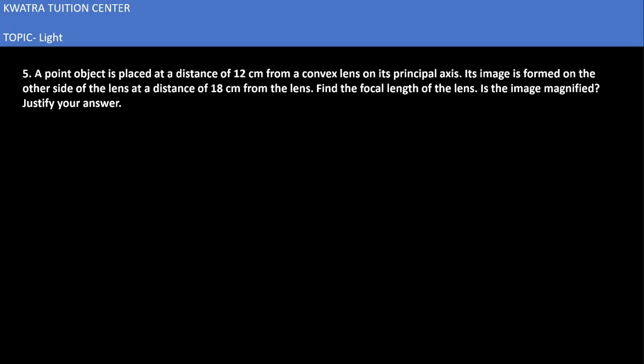Let's start with question number 5. An object is placed at a distance of 12 cm, so u is given as minus 12 cm, from a convex lens on its principal axis. Its image is formed on the other side of the lens at a distance of 18 cm. The image is formed on the other side, which means v is positive 18 cm.